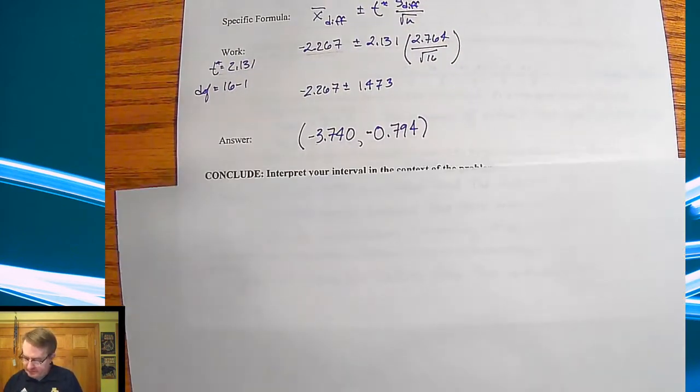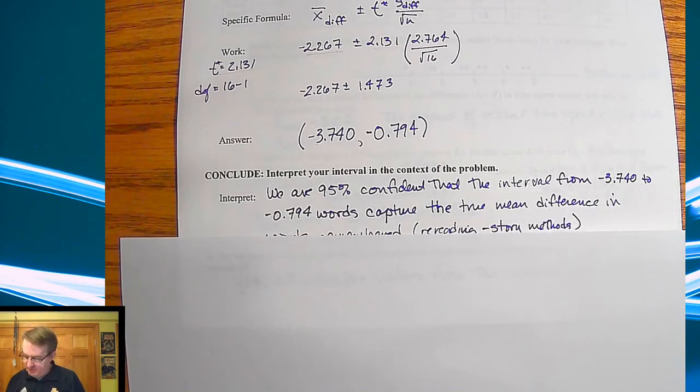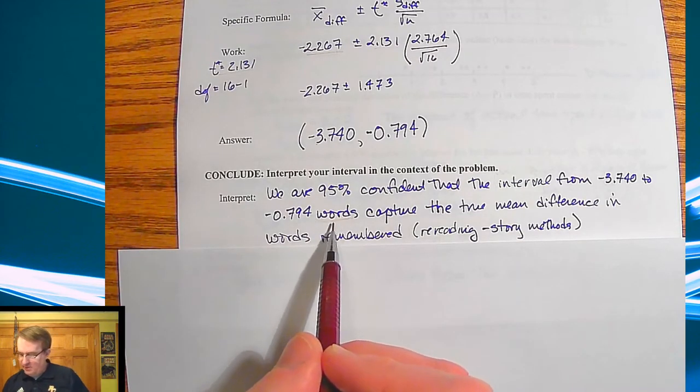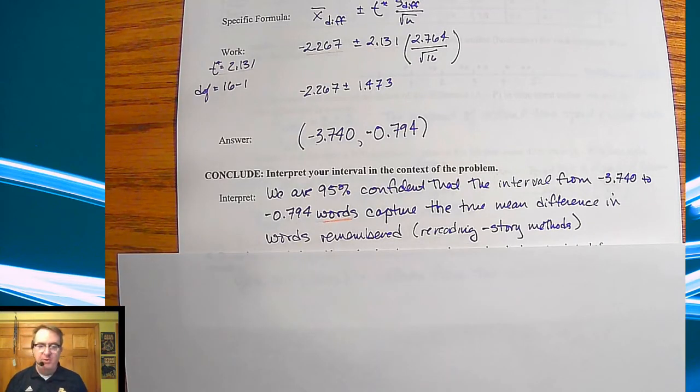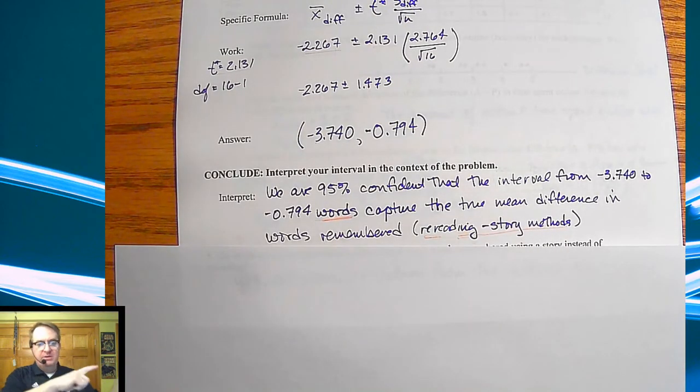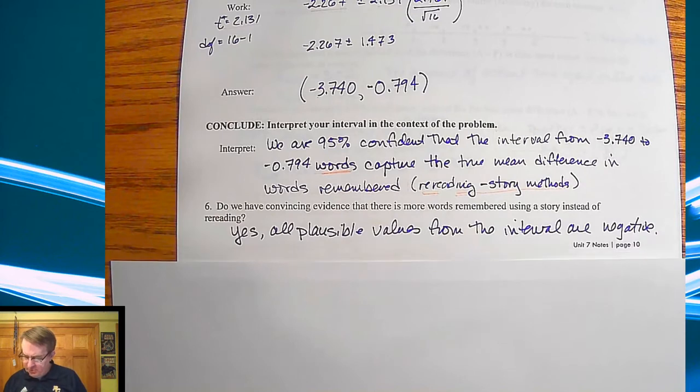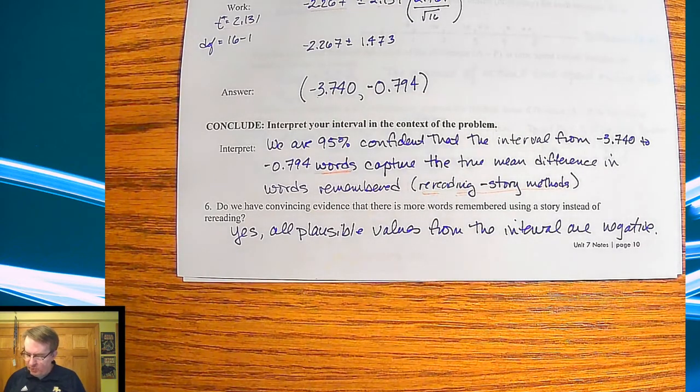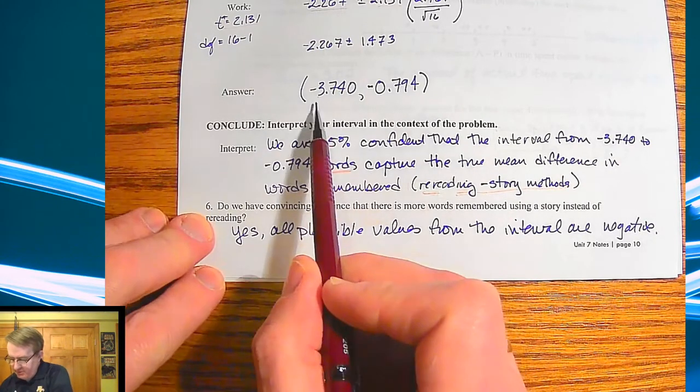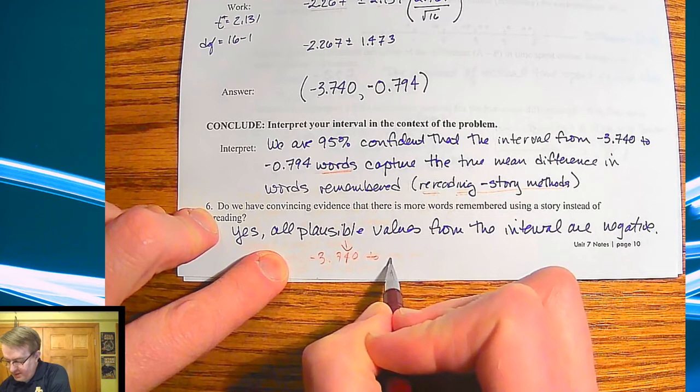Okay. Now the coup de grâce, conclude what's going on. So we are 95% confident that the interval from negative 3.740 to negative 0.794 words, again remember context here, that's important, capture the true mean difference in words remembered. And again, notice here we're talking about what do we do? I took the rereading minus the story methods. Because again, direction is going to matter. So in terms of do we have convincing evidence that there are more words remembered using the story instead of rereading? The answer is yes.